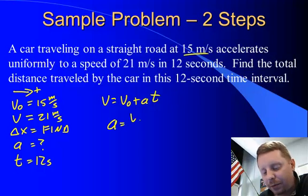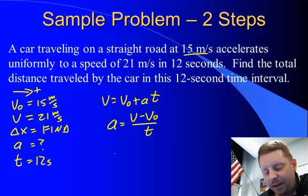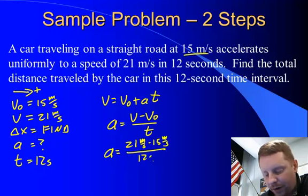a = (v - v₀)/t. Substitute in with units. 21 meters per second minus 15 meters per second all over 12 seconds. 6 over 12, a equals 0.5 meters per second squared.